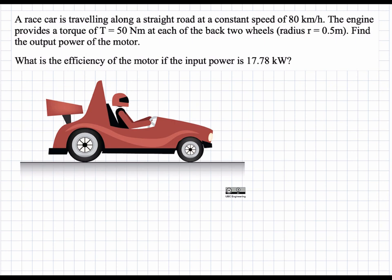Let's first focus on finding the output power of the motor. We're given a torque at each wheel and the velocity of the car, and we know that power P is equal to torque times angular velocity omega. At each wheel we have an input torque, and these wheels are spinning with a certain omega, which determines our output power — the power used to propel the car forward. Assuming no friction at the wheels and no losses, all of this power propels the car forward.